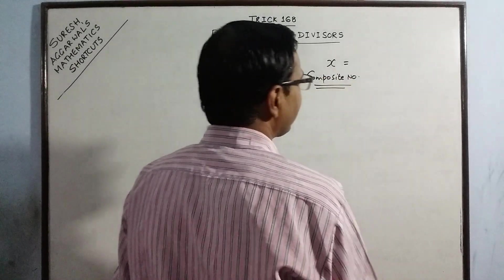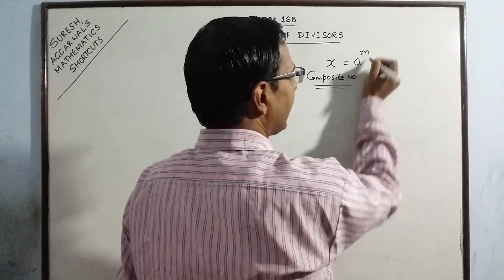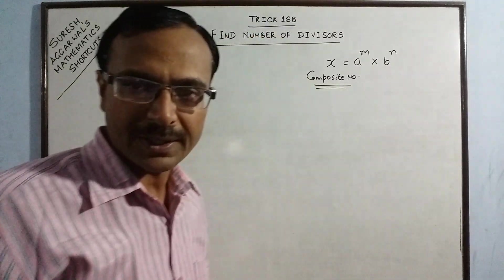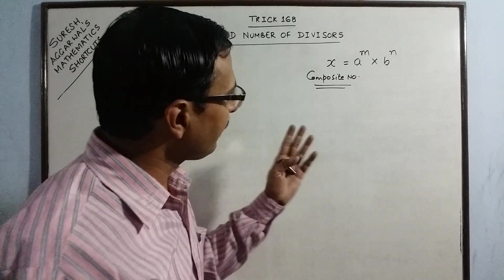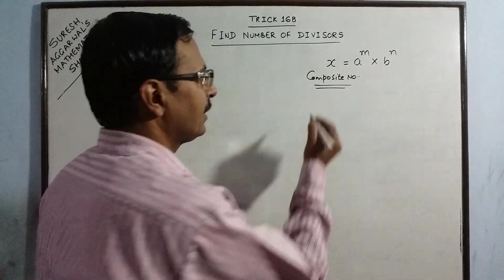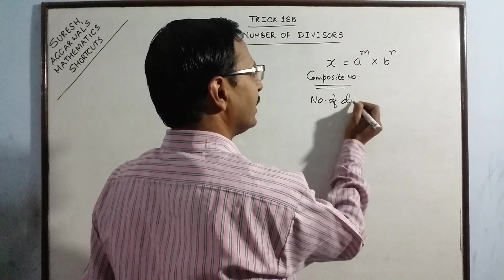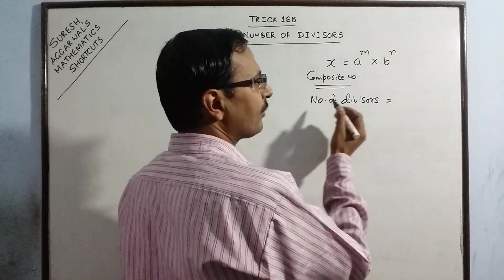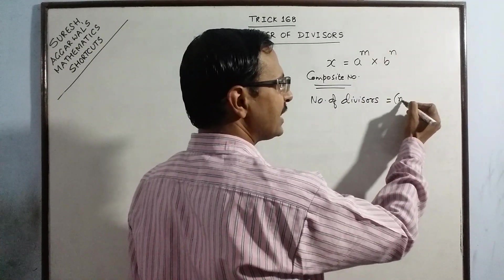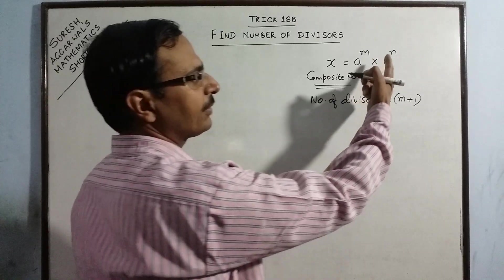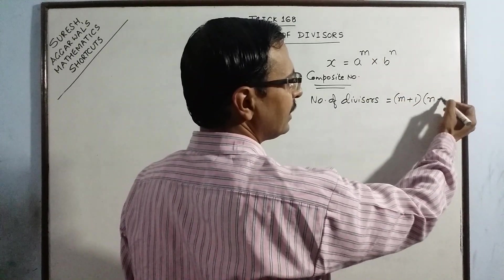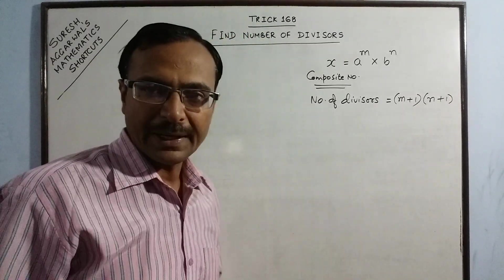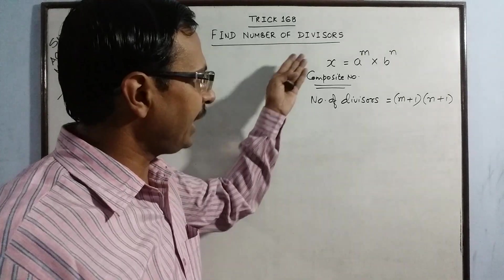We have to just make the prime factors of x and express them in powers. Suppose the prime factors of x are a raised to power m into b raised to power n. Suppose there are two factors a and b repeated m times and n times. Then number of divisors of this number x will be the power of a is m, so just increase m by 1 and the power of b is n, so just increase n by 1 and multiply the two obtained numbers. You will get the number of divisors of x.